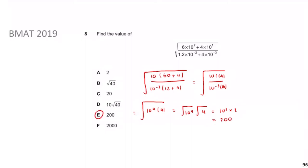The answer is 200, which maps onto E. With this technique, once you get nice numbers like 64, 16, and 10 to the power of 4, it's quite evident that they're easy to square root — and that tells you you're on the right path. Remember, you're not allowed a calculator in this section, so you should always expect nice, easy-to-work-with numbers.